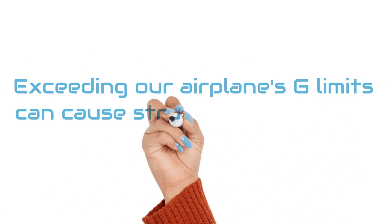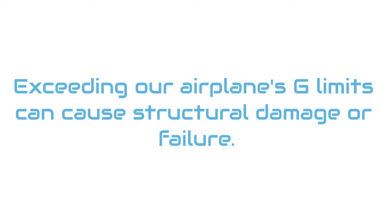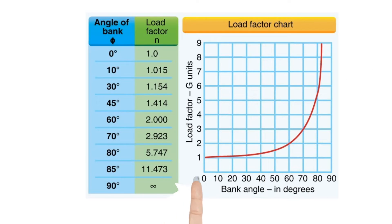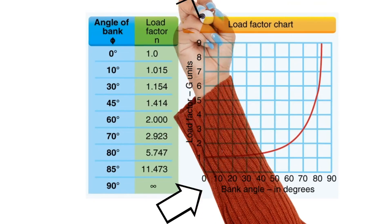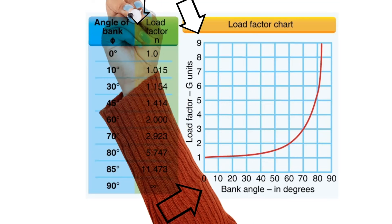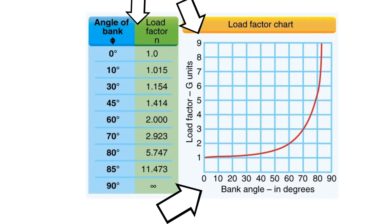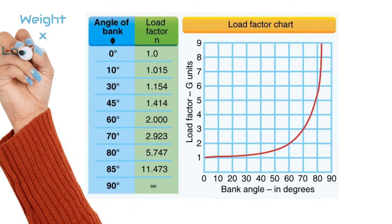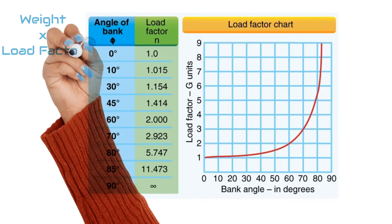This is important because exceeding your airplane's g-limits can cause structural damage or failure. On your FAA written exam, they will show you a load factor chart like this one. The amount of bank is given along the bottom of the graph and the load factor is up the left side of the chart. The table also provides the load factor corresponding to specific bank angles. You will use this chart to answer some exam questions, computing the load factor by multiplying the airplane's weight by the load factor given for a specific bank angle.